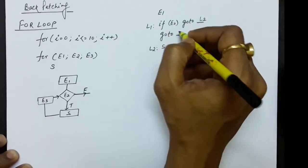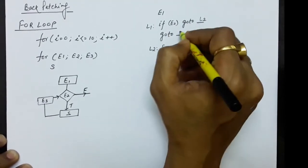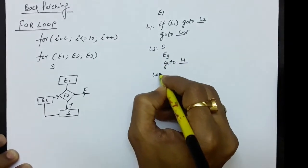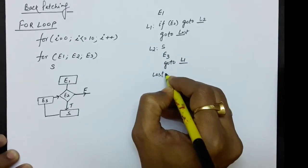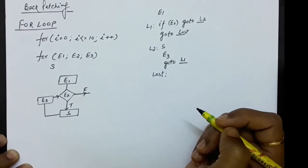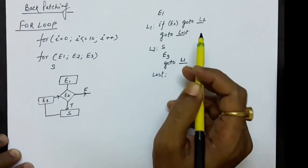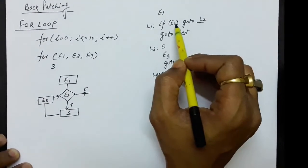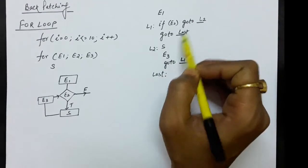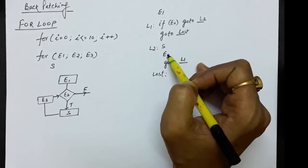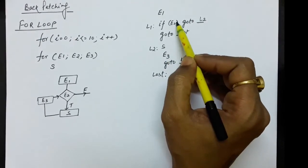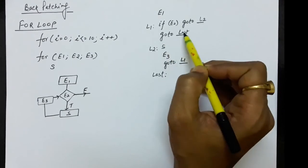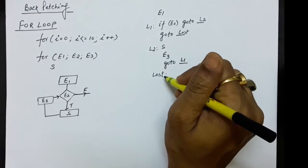If the condition is not true, we come to the last level. This way you can write the three-address codes for the for loop. If the condition is true, you execute S and E3; if the condition is not true, you automatically come to the statement that leads to the last level.